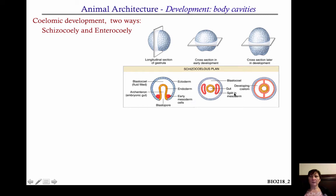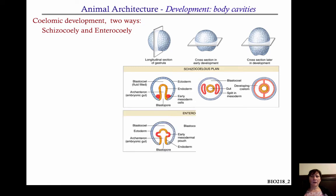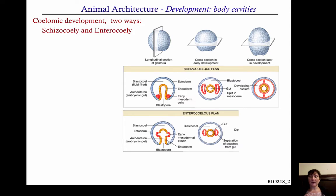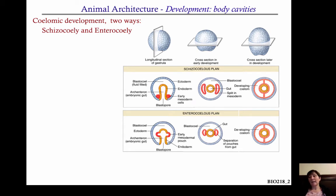Alternatively, the mesodermal cells can actually form outpocketings from the endoderm. They pinch off, form little cavities inside the body just as you saw with schizocoely, and ultimately form a complete coelom. These are two different ways to form a coelomic cavity, and when you get to the end point you can't tell just from looking at the organism which method was used — you would have to have observed it in early stage embryos.